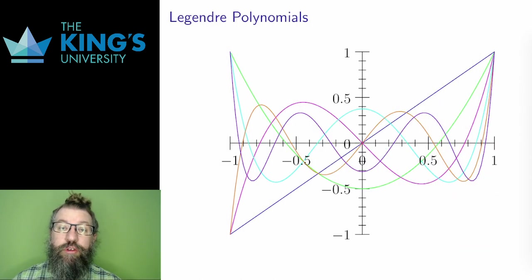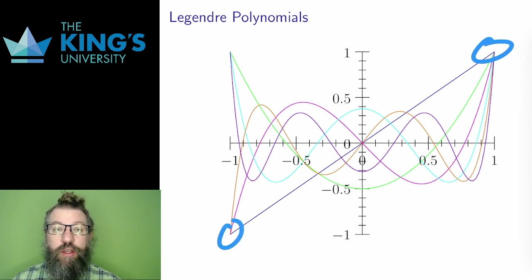Here's a graph of the first six Legendre polynomials on the domain negative 1 to 1. A few things to notice. First, they all go through the point 1, 1 at the end, and they all start either at negative 1, negative 1, or negative 1, 1. The odd ones start negative, and the even ones start positive.